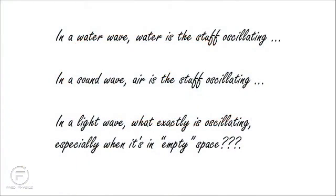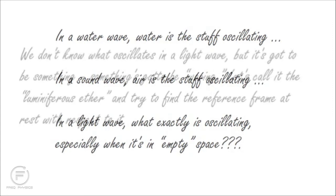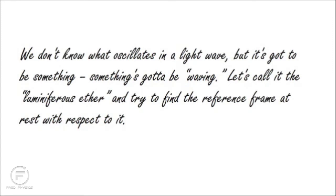Now, there is something that gives you pause. In a water wave, you know water is the stuff oscillating. In a sound wave, air is the stuff oscillating. But in a light wave, what exactly is the stuff that oscillates? Unlike sound waves, light waves obviously propagate through empty space, so the oscillating stuff can't be any known material. But you say, even if we don't yet know what it is, there's got to be something doing the waving. So let's just call it the luminiferous ether and try to find the reference frame at rest with respect to it.